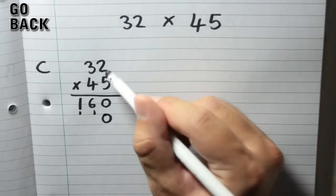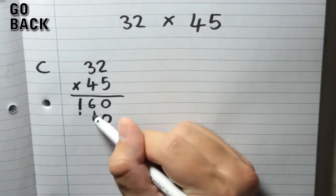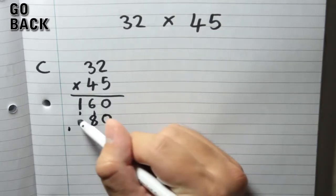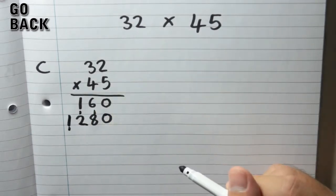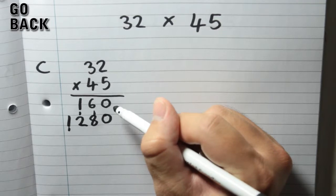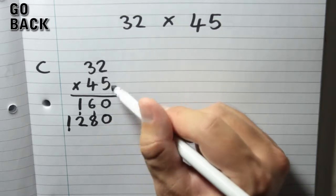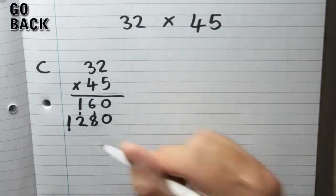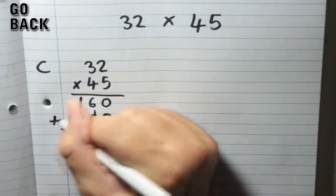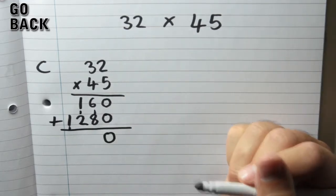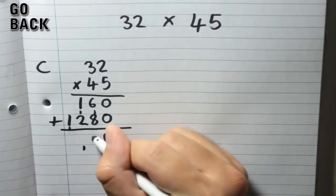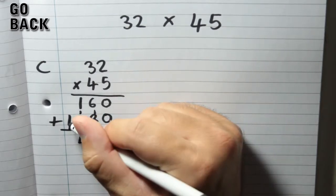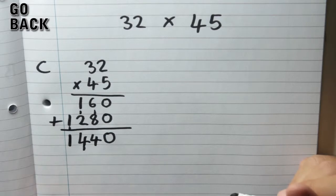Don't forget that. So now we'll do 2 times 4, which is 8. And then 3 times 4, which is 12, so I'll put a little 1 down here, 2 there, bring the 1 up, and you've got 1,280. This top number, 160, we got when we did 32 times 5. This bottom number, 1,280, we got when we did 32 times 40. So now we're going to add them together: 0 plus 0 is 0, 6 plus 8 is 14, carry the 1, 1 plus 2 plus 1 is 4, and the 1 gives us 1 — giving an answer of 1,440.